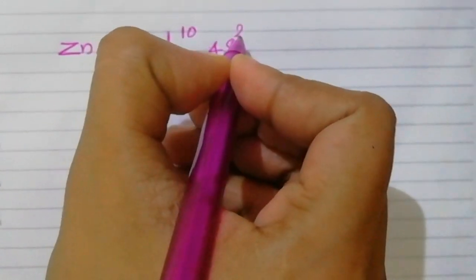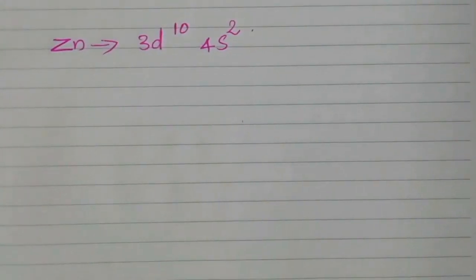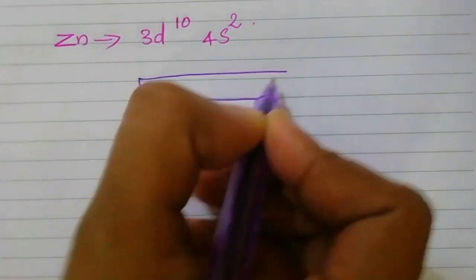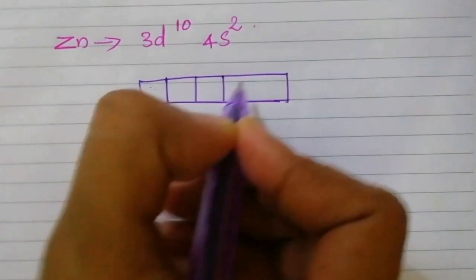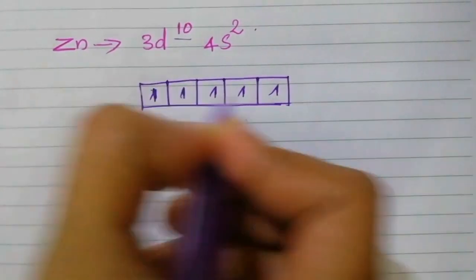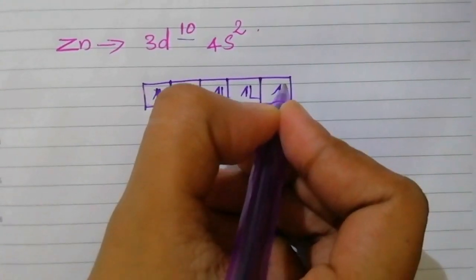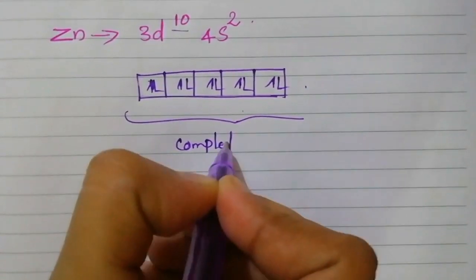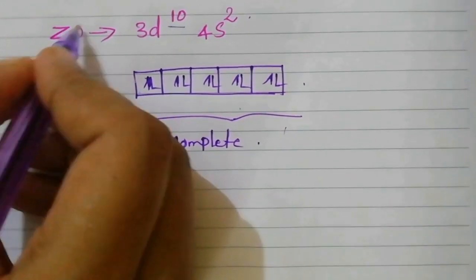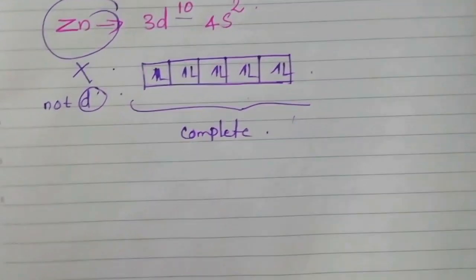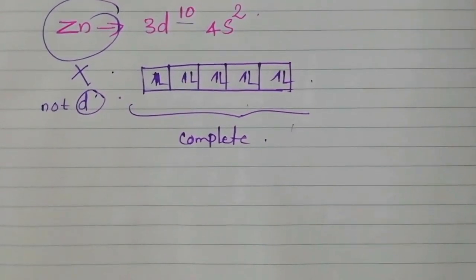Now let's see the next example: zinc. The outer electronic configuration of zinc is 3D¹⁰ 4S². Here the 3D orbital is completely filled — all 5 D orbitals have 10 electrons, meaning all D orbitals are completely filled. This does not satisfy the definition of a transition element. Zinc is placed in D block, but it does not contain a partially or incompletely filled D orbital, so zinc cannot be considered a transition element even though it is placed in D block.